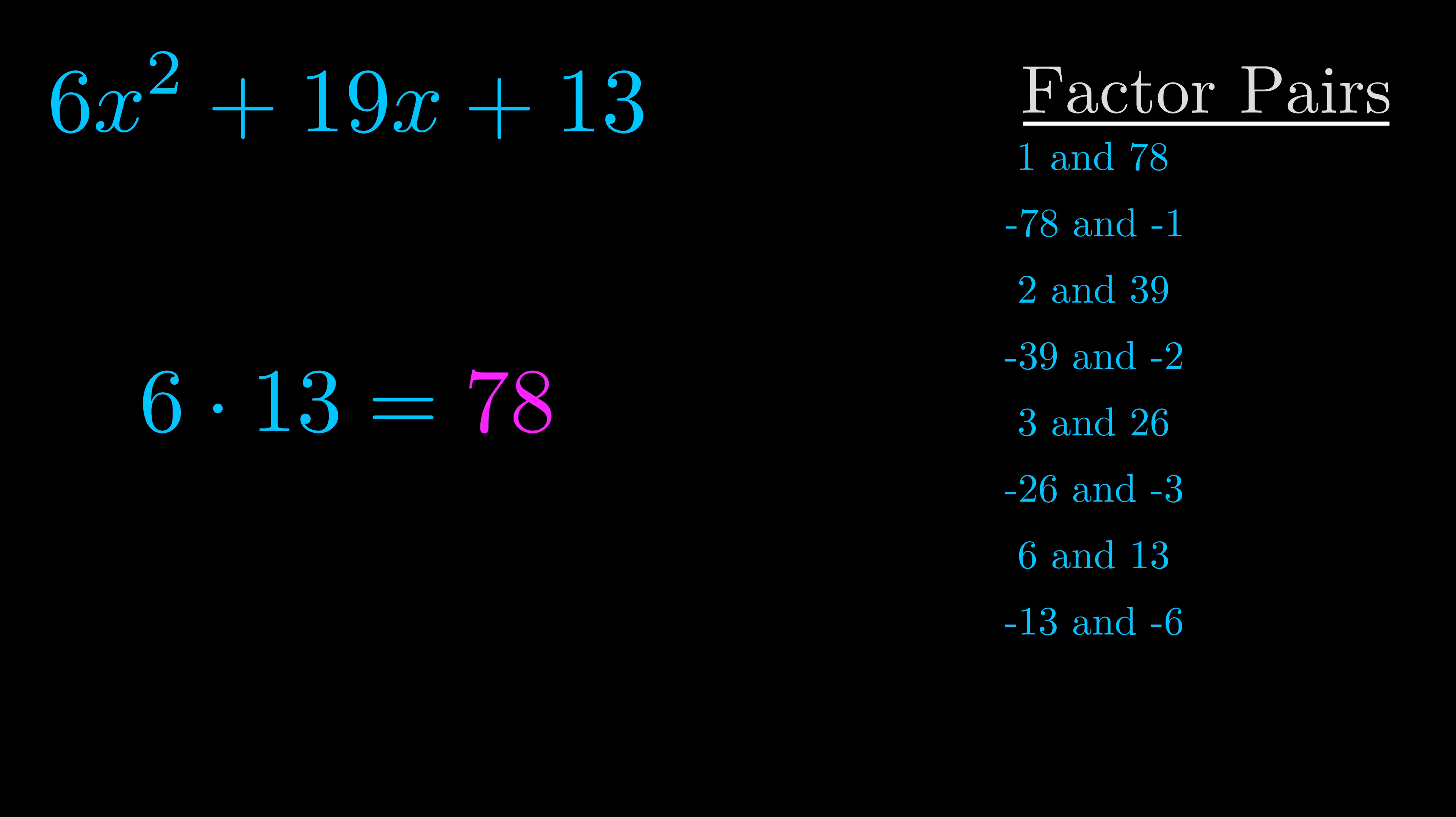The b value is the coefficient on the x term. That's the middle term, the one that we haven't done anything with yet. And really this is the only factor pair that we need.